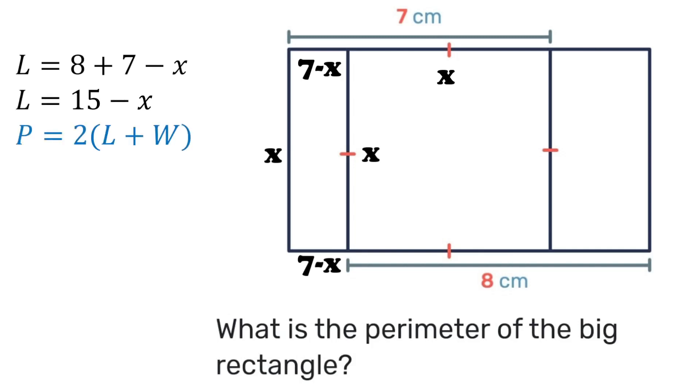When we substitute into our formula we'll have 15 minus x plus the width which is x but negative x and positive x they would cancel each other out and we're left with 2 times 15 which is 30. So no matter what size the square has the perimeter will always work out to be 30.